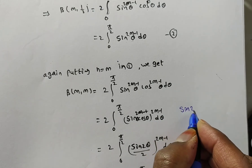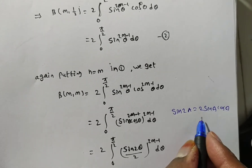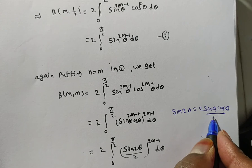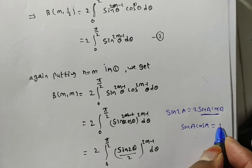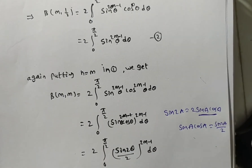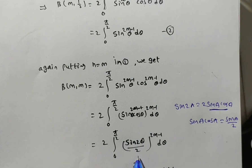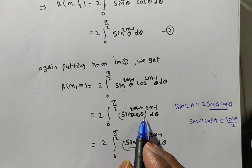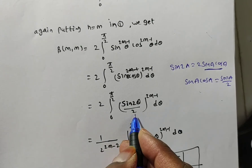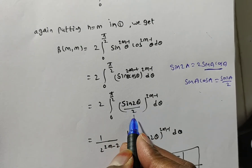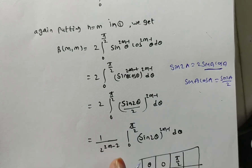We use the formula: sin 2a equals 2 sin a cos a. From this, sin a cos a equals sin 2a divided by 2. So sin theta cos theta equals sin 2theta over 2. Since 1/2 is a constant, it can be taken outside the integral. We then have (1/2) to the power 2m minus 1 as a factor outside, giving: (1/2)^(2m-1) times 2 times the integral from 0 to pi/2 of sin 2theta to the power 2m minus 1 d theta.